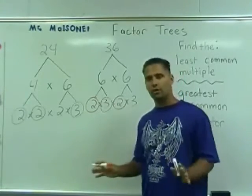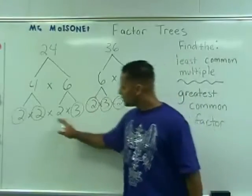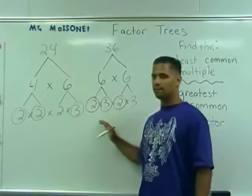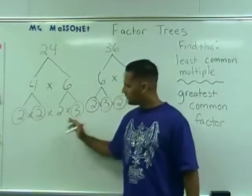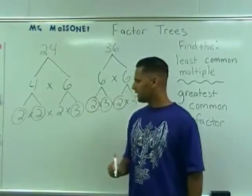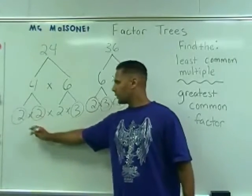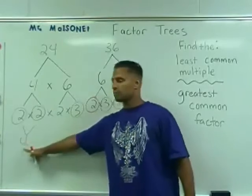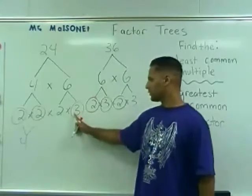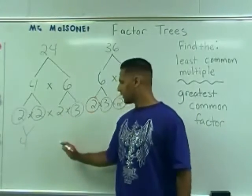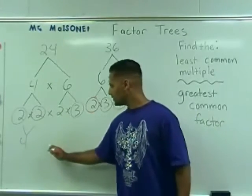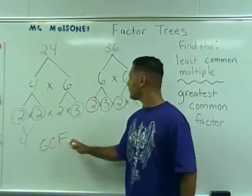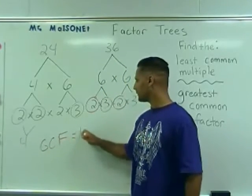Once you have circled all the numbers, take just one of the rows — either the left or the right — and multiply the circled numbers together. 2 times 2 is 4, and then 4 times 3 is 12. So we would say that the GCF of 24 and 36 is equal to 12.